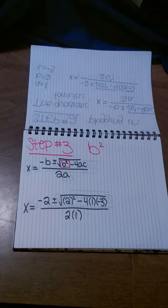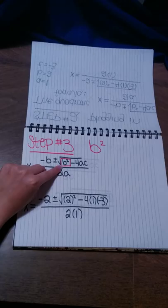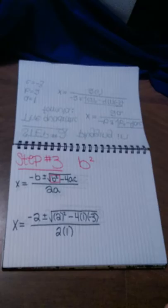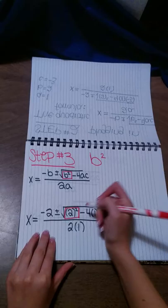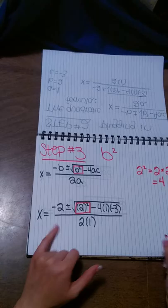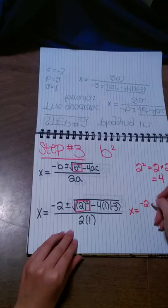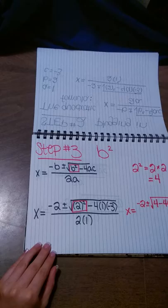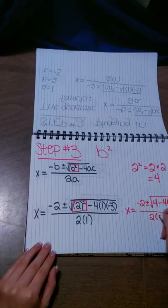Our next step is focusing on the b squared. I've highlighted where the b squared is in the quadratic formula. Looking at our equation, the b squared would be this 2 squared right here. So we take 2 squared — that's 2 times 2, which equals 4. Now if we write all this out again, we've got x equals negative 2, plus or minus the square root of 4, minus 4 times 1 times negative 3, all over 2 times 1.